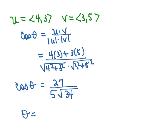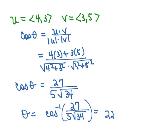So theta is going to be the inverse cosine of 27 divided by 5 times the square root of 34. And if we enter that on our calculator, we get 22.166 degrees.